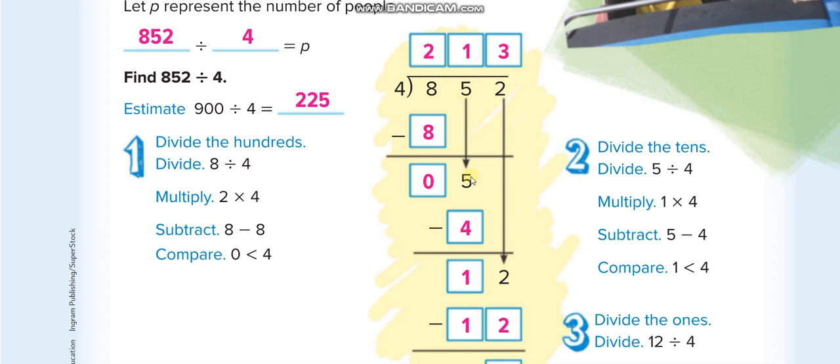Now it's turn for the next number. You will check: 4 times what will give you 5 or less than that? 4 times 1 is 4. 4 times 2 is 8. 8 is more than 5, right? So you will take 1. 4 times 1 is 4. 5 minus 4 is 1. Now you finish the second number.